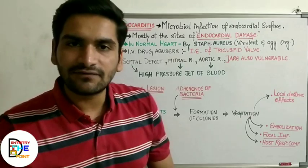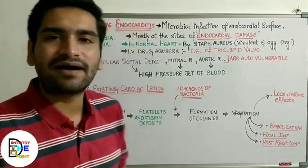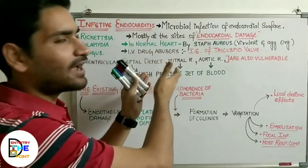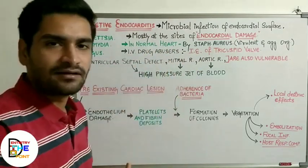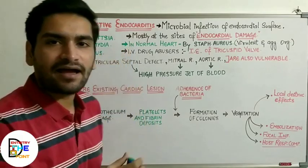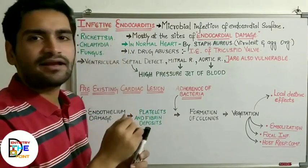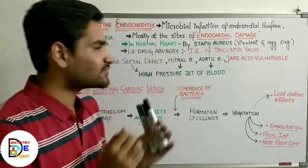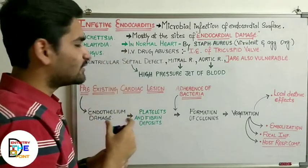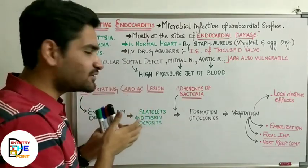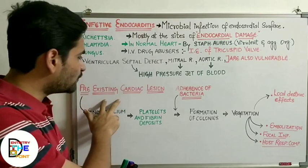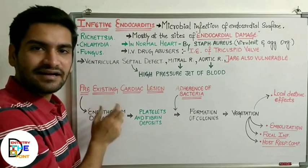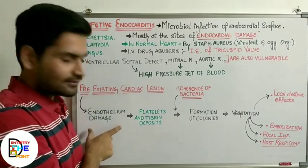So persons with aortic regurgitation, mitral regurgitation, or ventricular septal defect may also be affected by infective endocarditis. The main causative organisms are Rickettsia, Chlamydia, and fungus, though there are also various other organisms. Moving on to the pathophysiology: there is always a pre-existing cardiac lesion which leads to endothelium or endocardial surface damage.